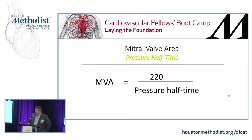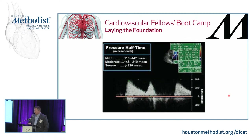The other way to grade severity of mitral stenosis is using the pressure halftime. You divide 220 by the measured pressure halftime to determine the mitral valve area. You take your CW tracing through the inflow portion of the mitral valve, trace that out — you need to have a straight line — and divide by 220. If the pressure halftime is more than 220 ms, it's severe mitral stenosis; 150 to 220 is moderate; less than 150 is usually mild.